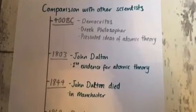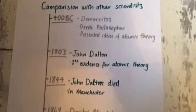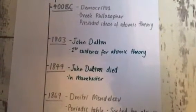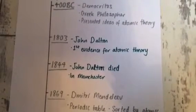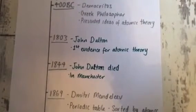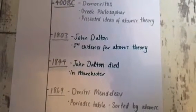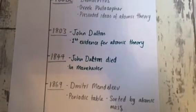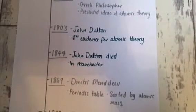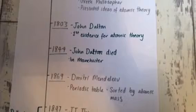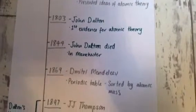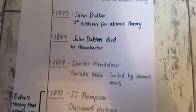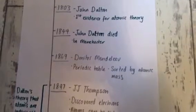So how does John Dalton fit into the history of atomic theory by way of comparison with other scientists? In 400 BC, Democritus, a Greek philosopher, presented ideas of atomic theory. However, he could not prove anything by way of experiment. In 1803, John Dalton provided the first experimental evidence for atomic theory ever seen.